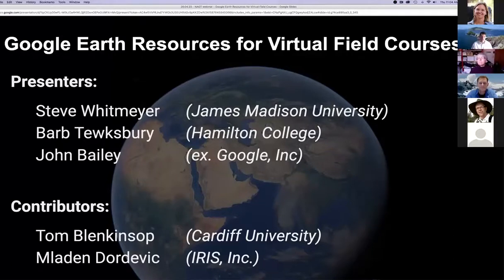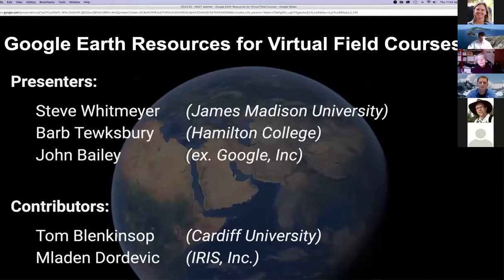I should introduce myself. I'm a professor at James Madison University, and I also at the moment wear a second hat as an NSF program director, but I will not be talking in my NSF capacity today — I will be talking in my JMU capacity. I'm Barb Tewksbury, professor of geosciences at Hamilton College. I'm a structural geologist. I've used Google Earth in almost all of my courses, and I also use it extensively in the research I do in Egypt.